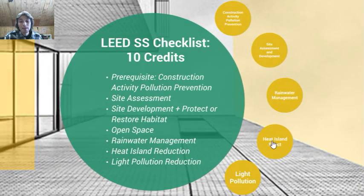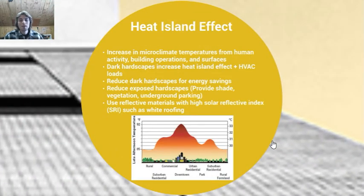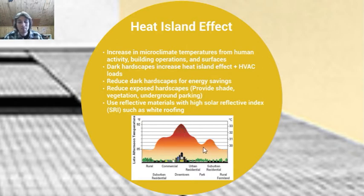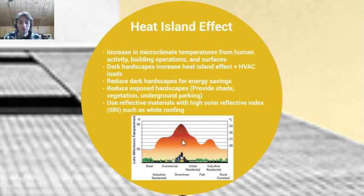Now onto the heat island effect, which is about temperature. The heat island effect is an increase in microclimate temperature from human activity, building operations, or especially surfaces like those hardscapes we just talked about. Looking at the picture, you can see that urban areas have the highest temperature thanks to hardscapes and dark surfaces, which absorb heat. As we go to the suburbs and rural areas, we see a reduction in temperature thanks to more vegetative cover. This puts a really big strain on HVAC systems in urban areas, and reducing dark hardscapes has a great effect on reducing energy loads.